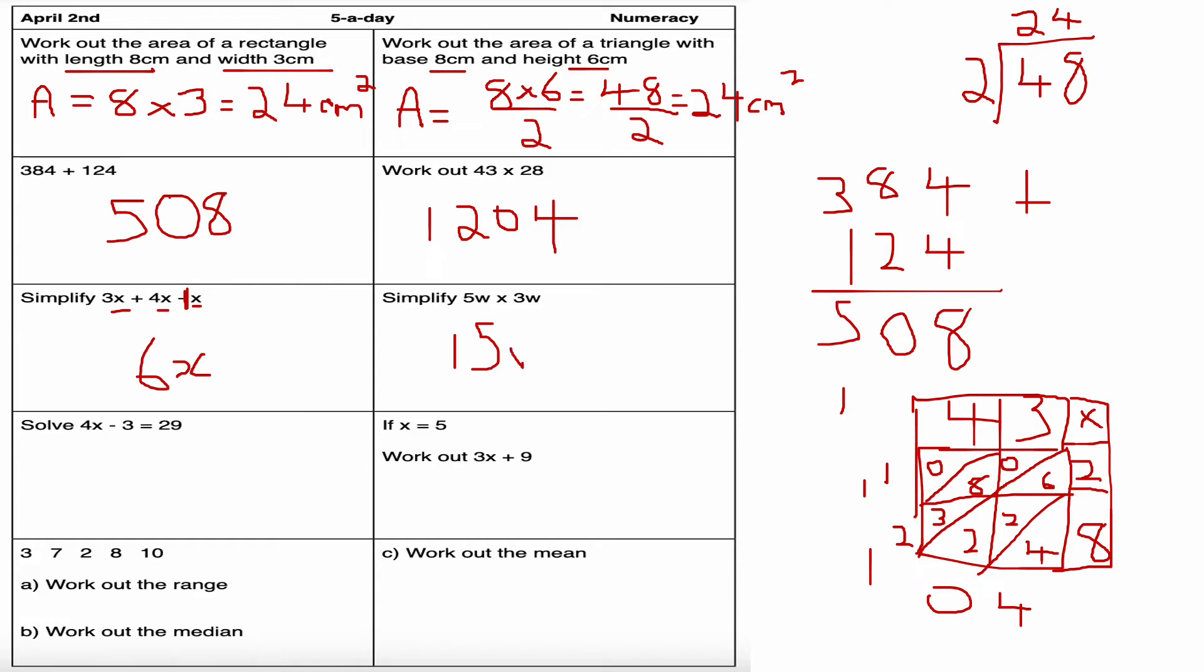Next question: simplify 5w times 3w. Well, 5 times 3 is 15, and w times w is w squared or w to the power of 2, so 15w to the power of 2 or 15w squared.